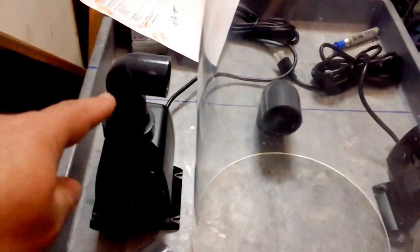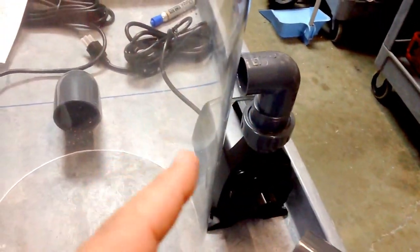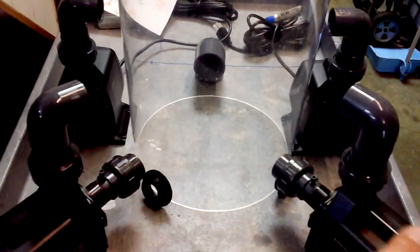And then the other two pumps, this one here and that one there, pull water from the sump through and inject it. So those two are actually feeding the skimmer and then these two here are recirculating.